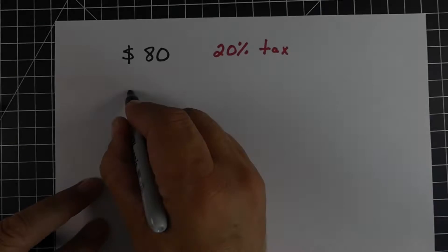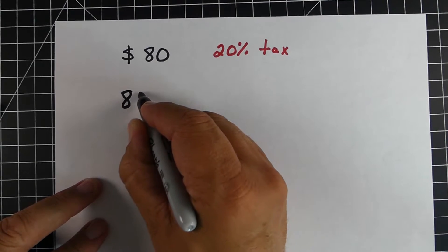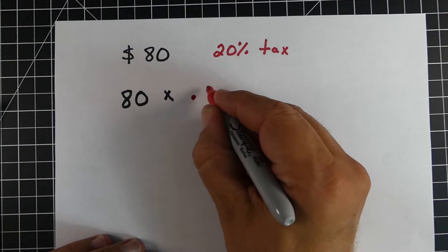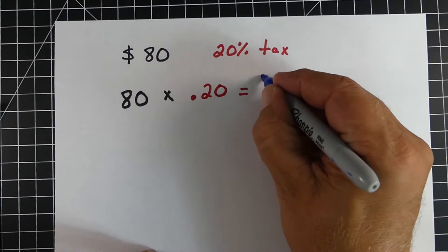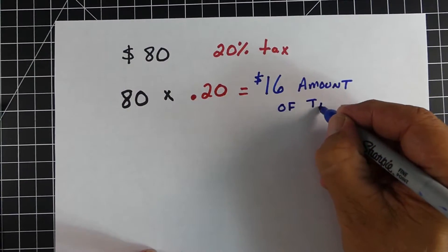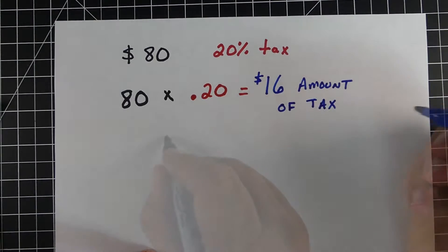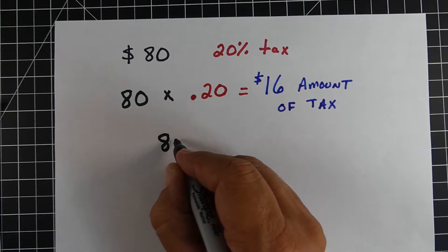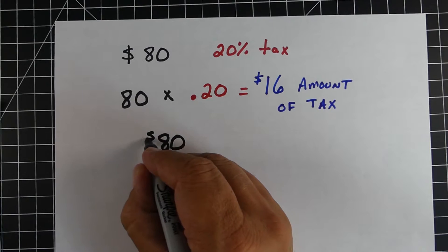All right, here's an example of our first method. And so what we're going to do, we have the problem, there's an $80 item with 20% tax, a pretty steep tax here. We're going to take the whole amount, 80, times the .20, which is the 20% tax, we're going to multiply those together and get the $16, which is the amount of tax.